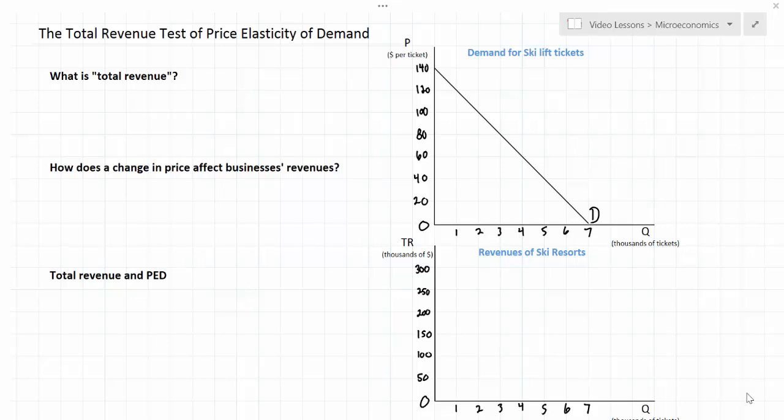By the end of this lesson you'll be able to explain the total revenue test and then use it in the future to determine quickly whether demand for a good is elastic or inelastic between any two prices without actually having to calculate the PED coefficient.